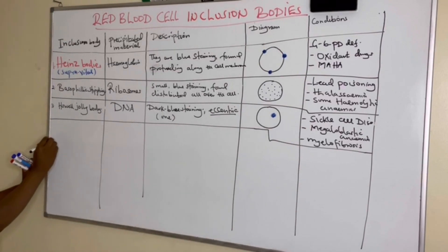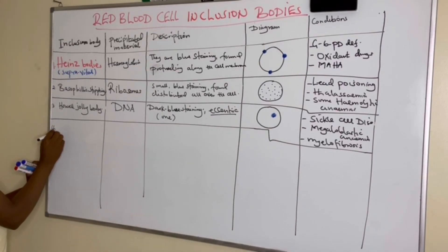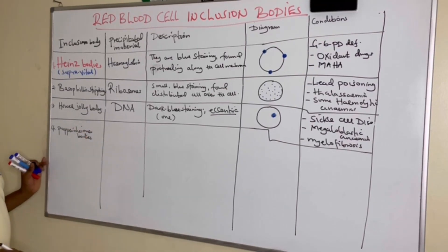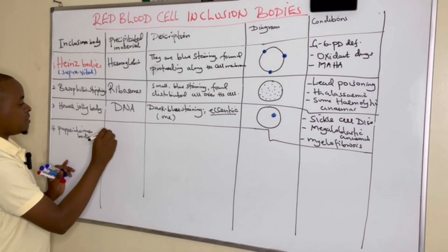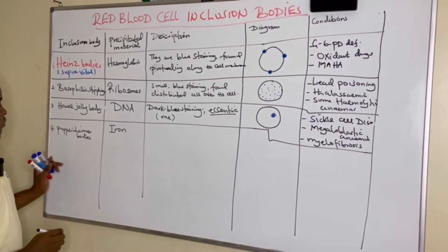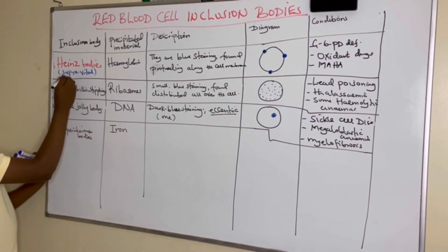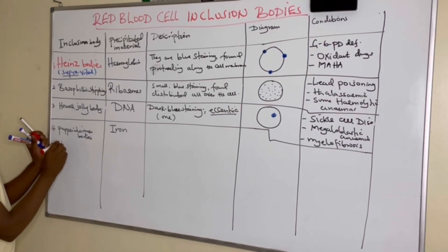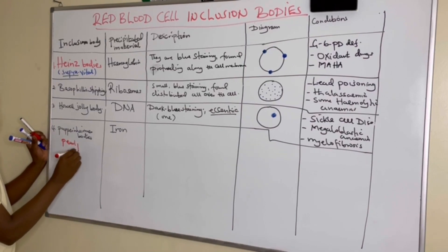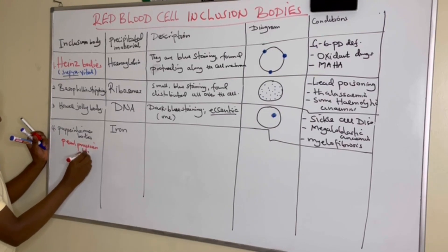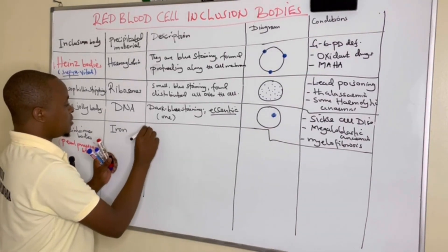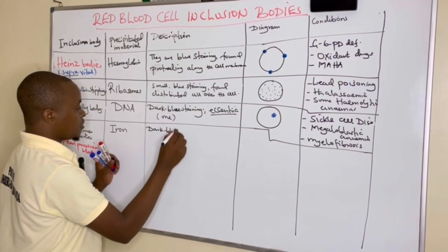Number four is Pappenheimer bodies — all these are seen on a thin film. The precipitated material in Pappenheimer bodies is iron. These can be demonstrated by Perl's Prussian blue stain, and they are very well demonstrated in the bone marrow. They are dark blue staining bodies.